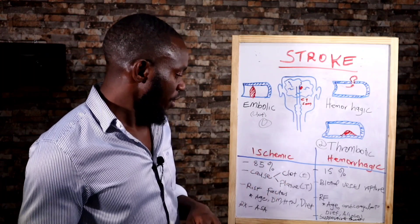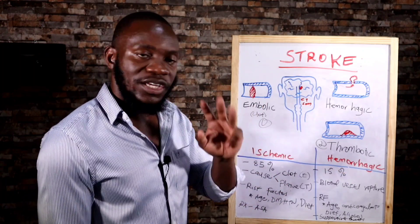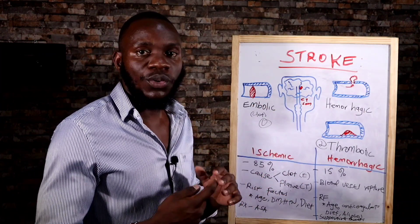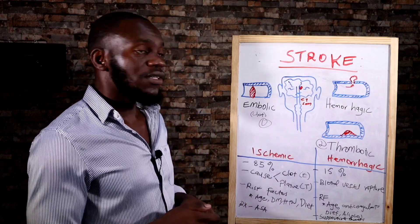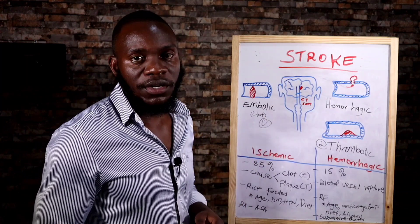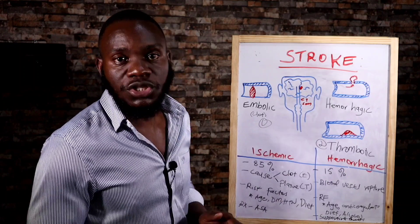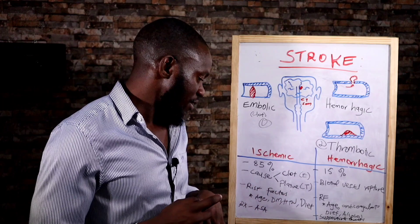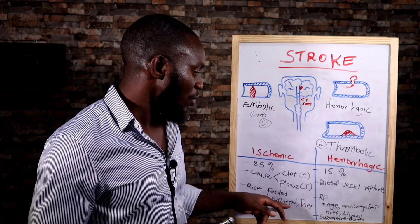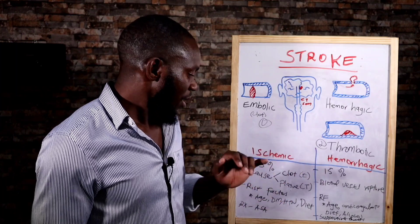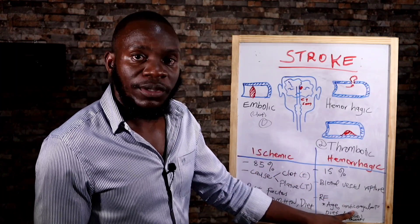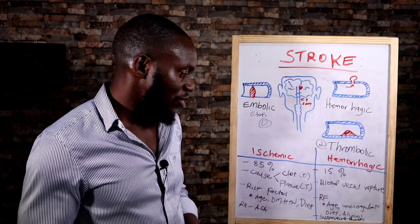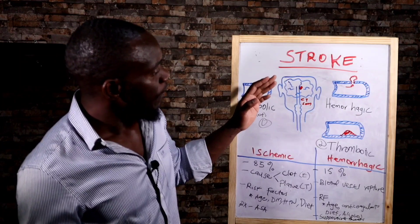The risk factors for both types of stroke include age — the older you get, the higher the chance of stroke — as well as diet, particularly simple carbohydrates and seed oils, diabetes mellitus, and hypertension. Specifically for hemorrhagic stroke, anticoagulants like aspirin can actually cause hemorrhagic stroke.